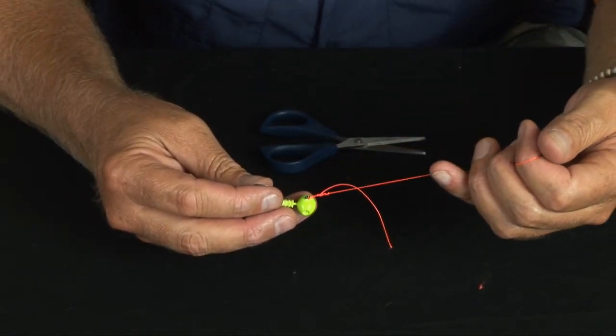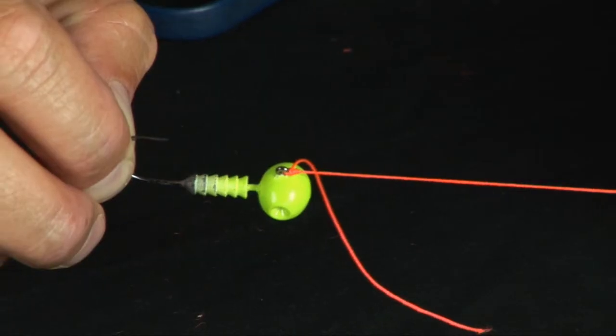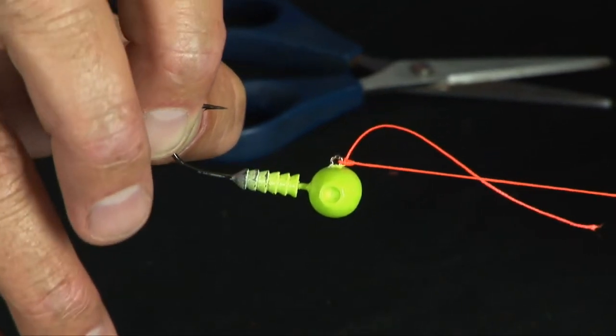Pull it down, and the harder you pull, the harder that knot locks onto the eyelet. Trim your tag end off nice and close.